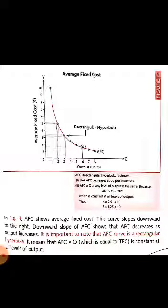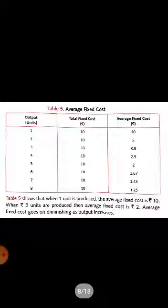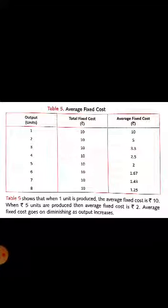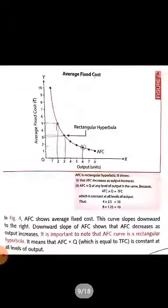The average fixed cost curve is also a rectangular hyperbola, because if AFC is multiplied by output it always equals total fixed cost, which is constant. For example: 10 × 1 = 10, 5 × 2 = 10, 3.3 × 3 = 10, and 1.25 × 8 = 10. Since AFC × Q equals the constant value of 10 at every level of output, this curve is called a rectangular hyperbola.